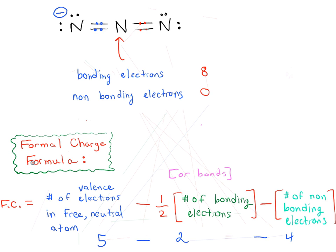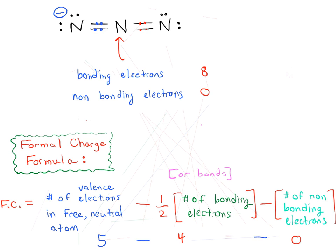Starting with five valence electrons for free neutral nitrogen, then subtract one-half times the number of bonding electrons: one-half times eight equals four. You get the same answer by just counting the number of bonds — there are four bonds here. The number of non-bonding electrons is zero. So five minus four minus zero gives a charge of plus one, usually written as just a plus sign.